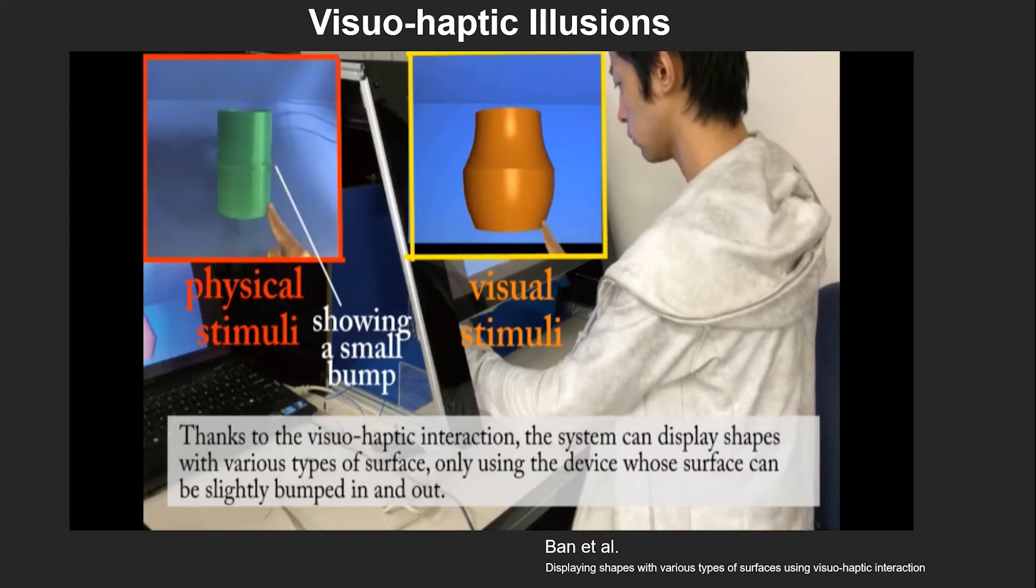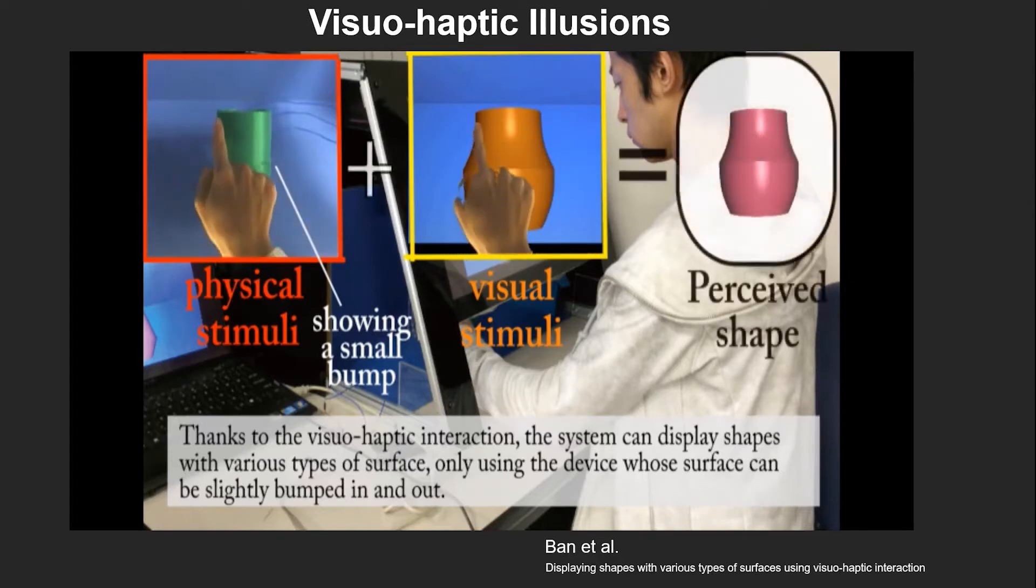However, the question arises: how much discrepancy between a physical and virtual object may be introduced while remaining unnoticed by a user?